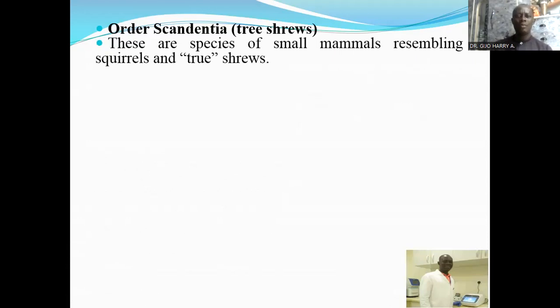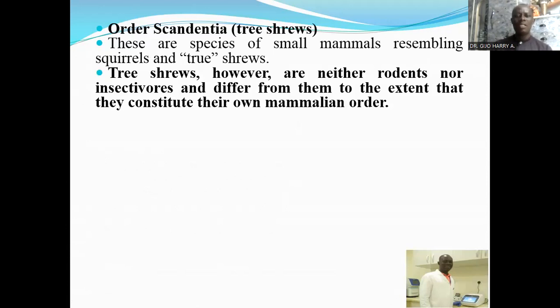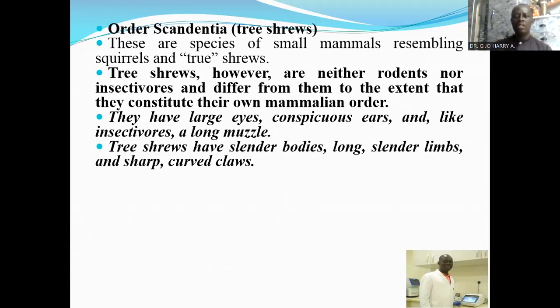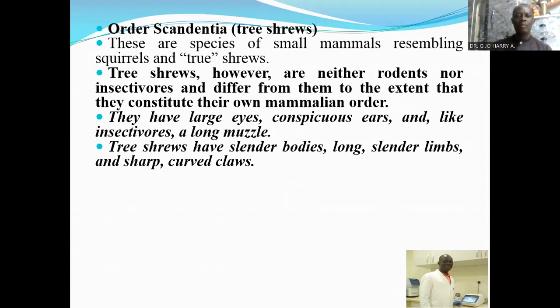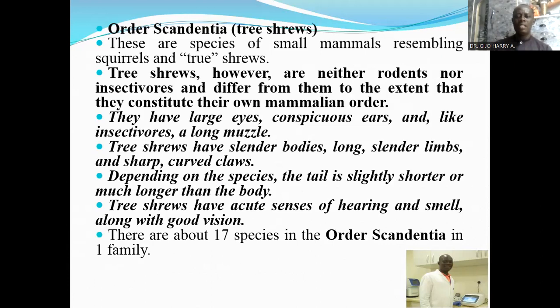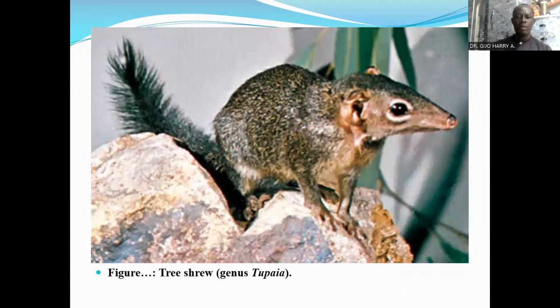The next order is the order Scandentia, which consists of the tree shrews. These are species of small mammals resembling squirrels. Tree shrews, however, are neither rodents nor insectivores, and differ from them to the extent that they constitute their own mammalian order. They have large eyes, conspicuous ears, and a long snout. Tree shrews have slender bodies, long slender limbs, and sharp curved claws. They have acute senses of hearing and smell, along with good vision. There are about 17 species in the order Scandentia. Here is a tree shrew in the genus Tupaia.